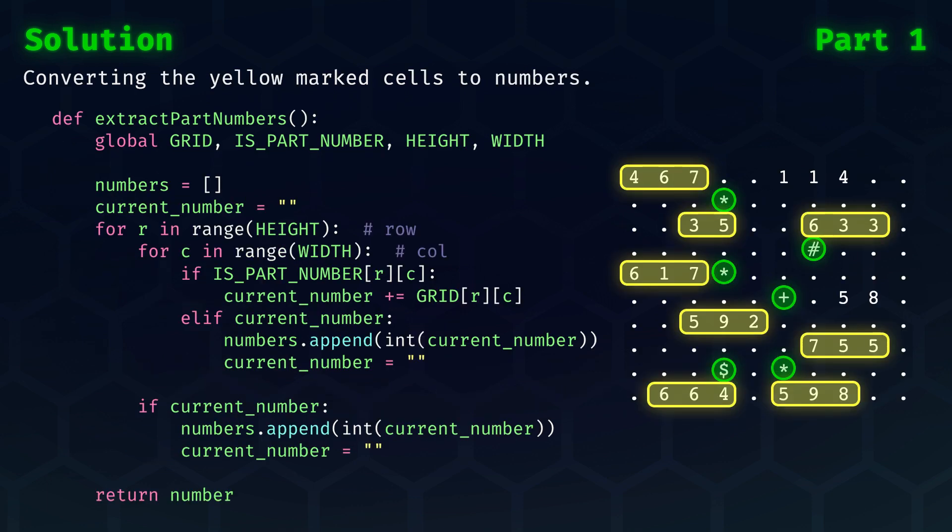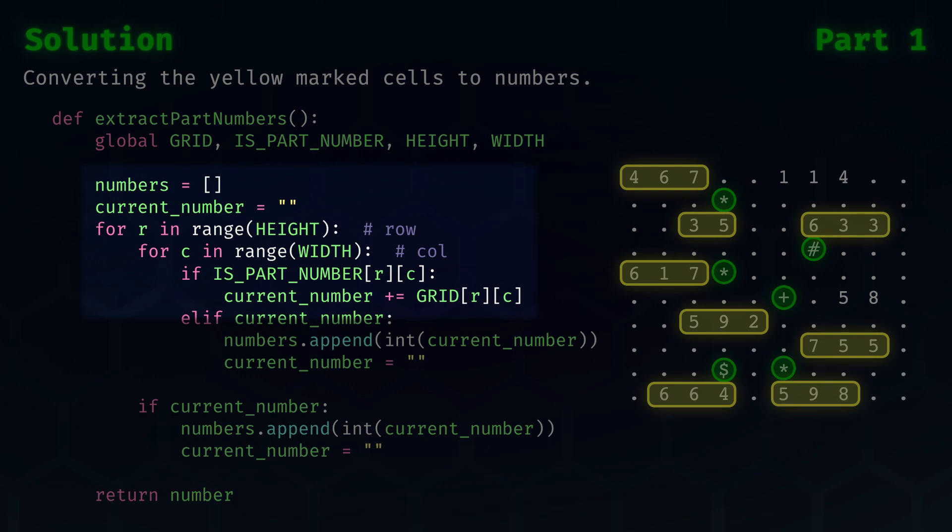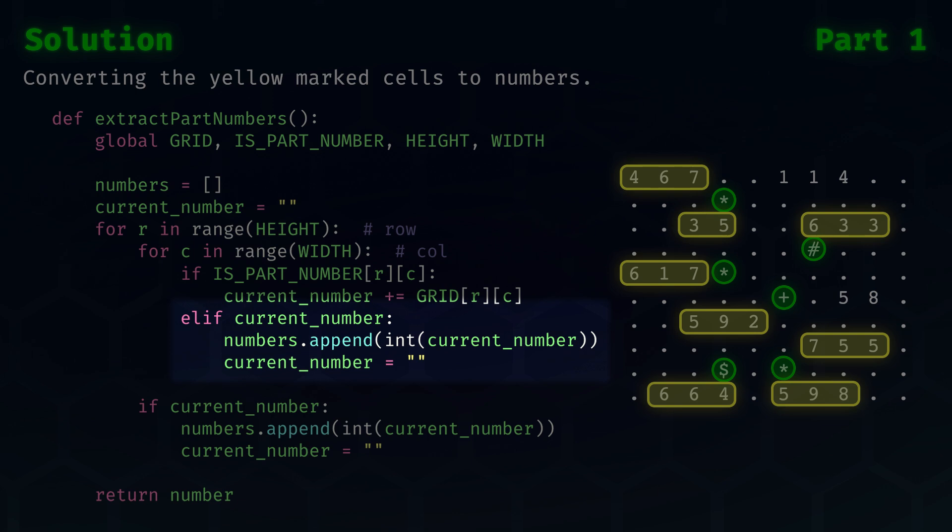Finally, we need to extract the part numbers from the grid. All yellow numbers are now marked as being part of some part number, but they're not combined yet. To get them, we can loop over the grid rows and columns, and if the grid at a position is a part number, then we add it to the current number. If it is not, meaning we encounter a dot or a symbol, then we know that the number has ended, and we append it to the numbers list as an integer.